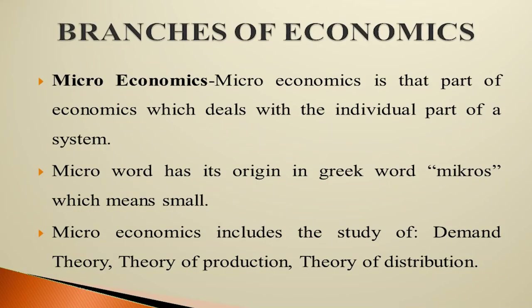Now, the branches of economics. There are two main branches: microeconomics and macroeconomics. Microeconomics is the part of economics that deals with the individual parts of a system — when we study an individual, we call it microeconomics. The word 'micro' is derived from the Greek word 'micros' which means small. Microeconomics includes the study of demand theory, theory of production, and theory of distribution.